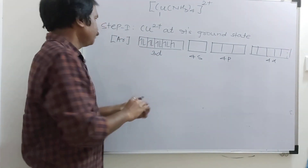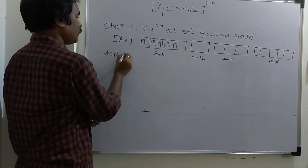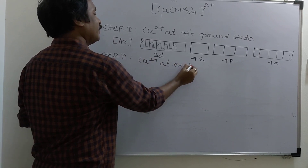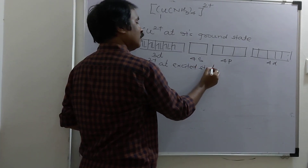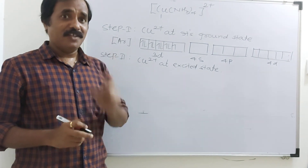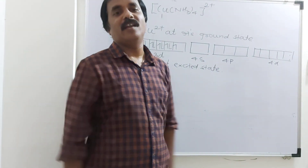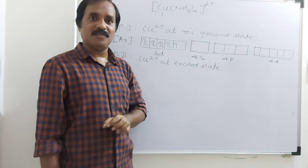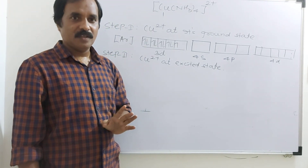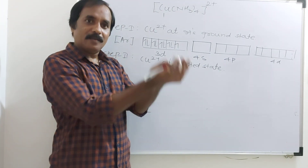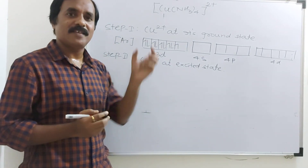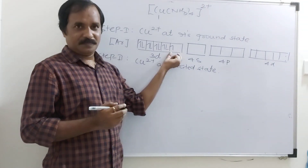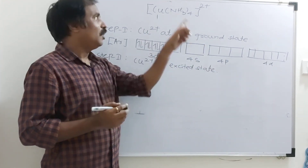Step number 2: Cu²⁺ at excited state. When excitation occurs — when there is attack of strong ligands on the metal or metal ion — ammonia is a strong ligand. When there is attack of 4 strong ligands, definitely there is excitation. In a complex, generally what happens is inner shifting of electrons and inner pairing of electrons when there is attack of strong ligands.